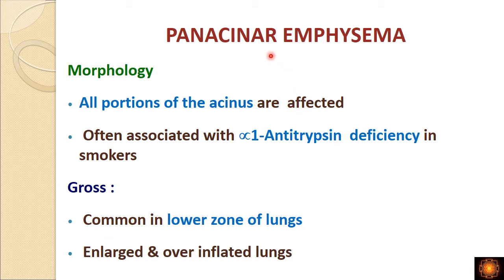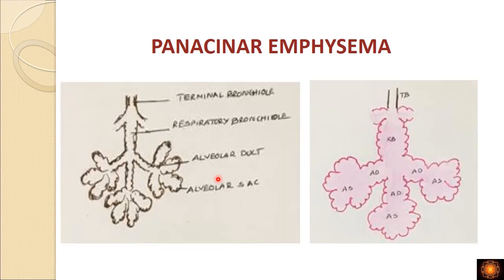Panacinar emphysema: 'pan' means entire, so all parts of the acinus are dilated. This type is more common in patients with alpha-1 antitrypsin deficiency, and also occurs in smokers — though in smokers centriacinar is more common. Panacinar emphysema is more common in the lower zones of the lungs, whereas centriacinar is more common in the upper zones.